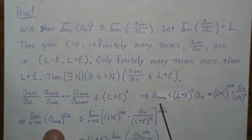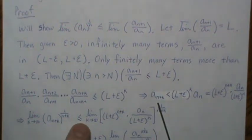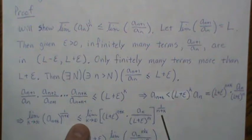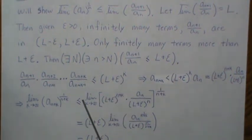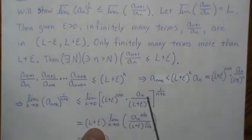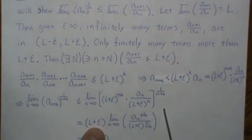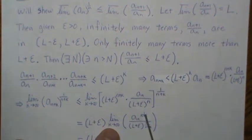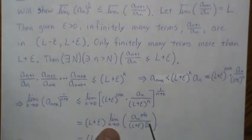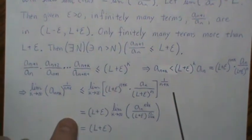We take the (n + K)th root, then let K go to infinity. On the right side, the term without an index K can be brought out front. For the remaining parts, we raise them to the power 1/(n + K). When K goes to infinity, the denominator goes to infinity, which means the exponent goes to zero, so A_n^0 = 1. Similarly, (L + ε)^0 = 1 — so those terms limit to one and we can drop them.